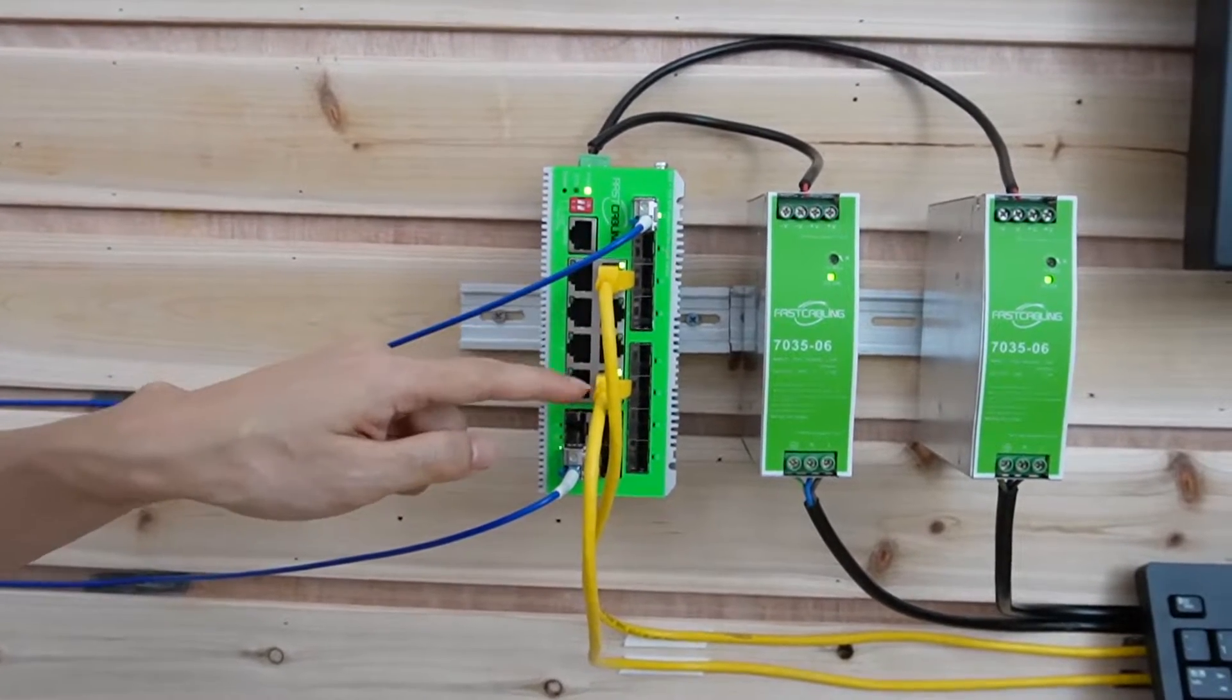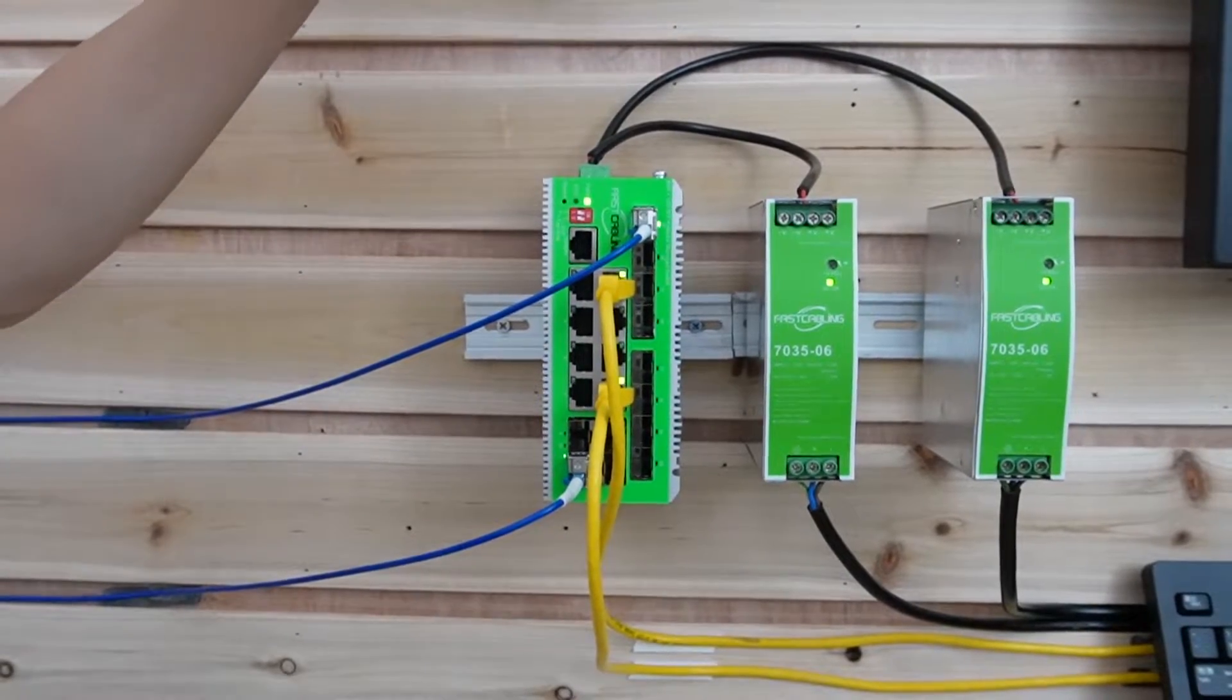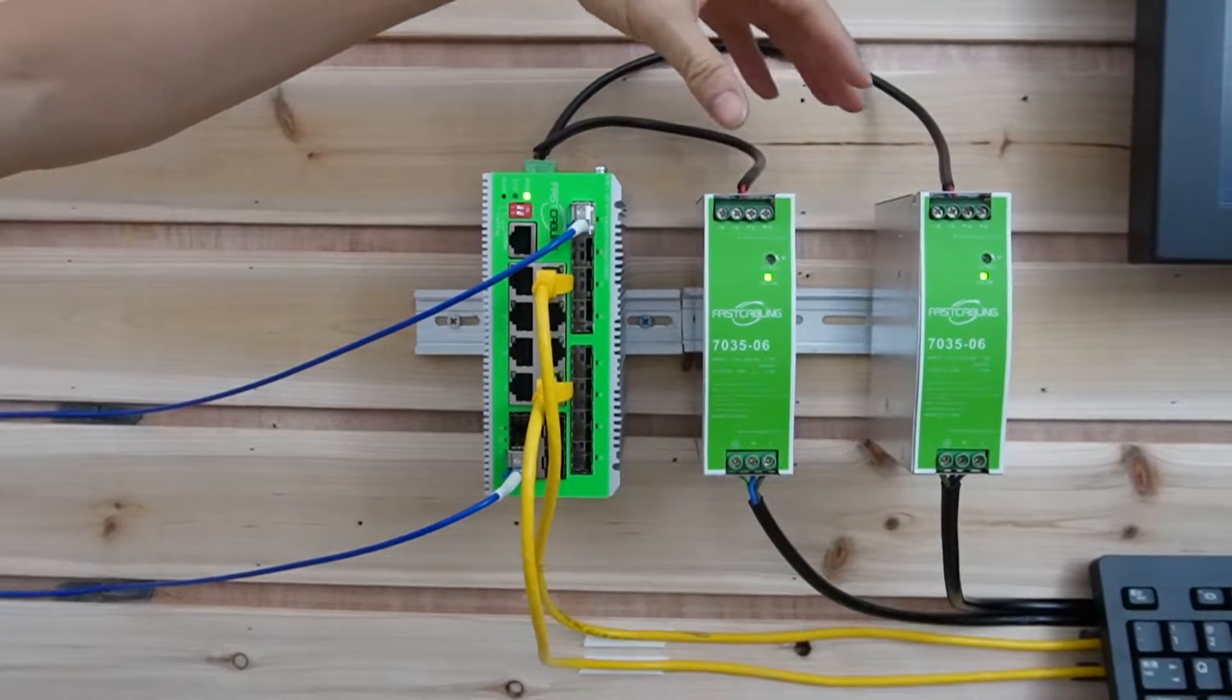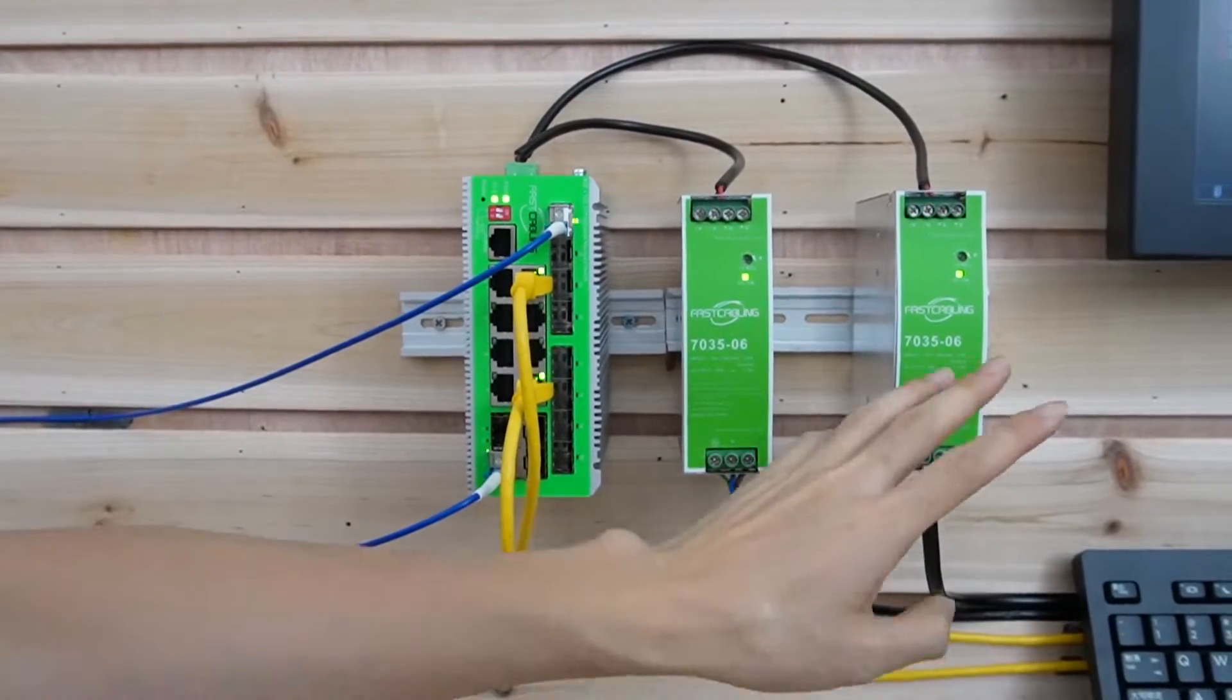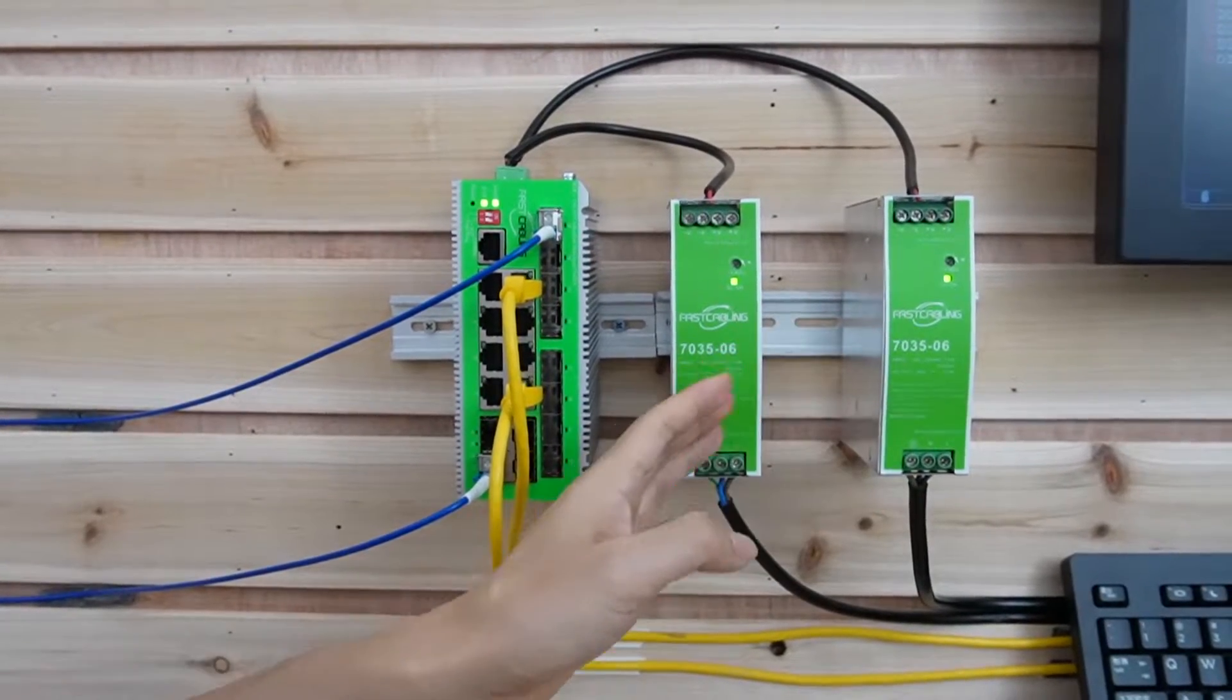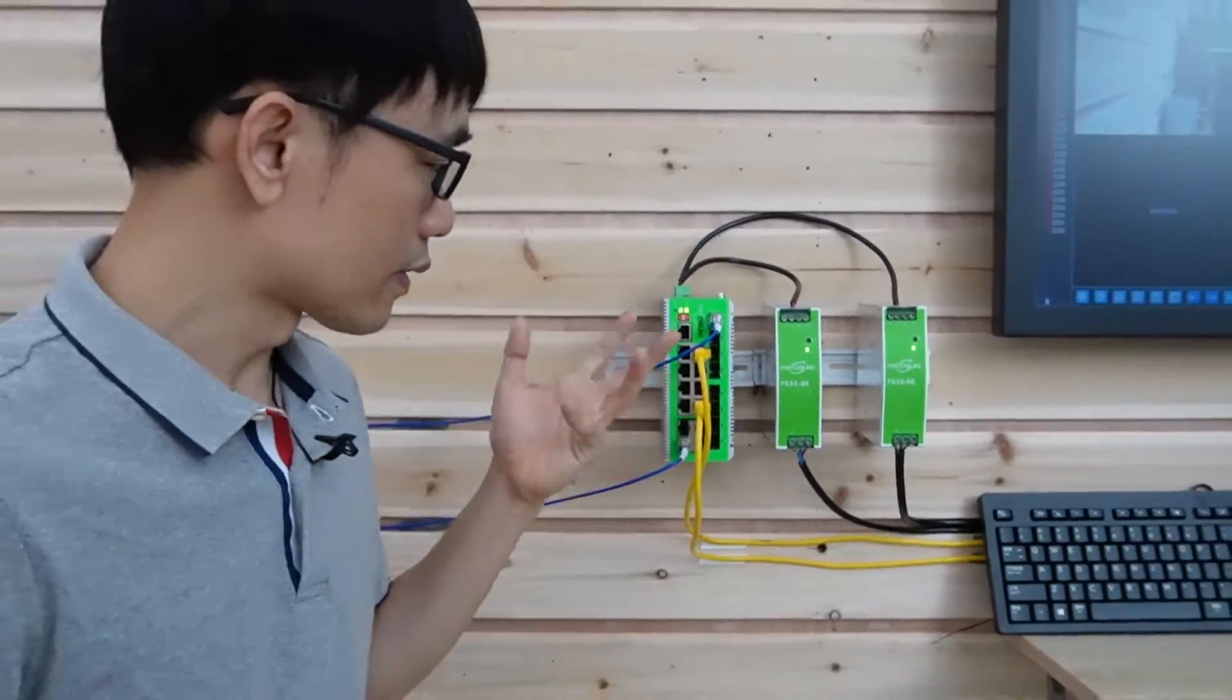These two cables are connecting to the network video recorder. That's the reason why we are seeing the camera live. And I use this industrial grade network switch. It supplies redundant power sources. I use two power sources to power this switch. If one of the power supplies goes down, the network switch is still working. Also, the industrial grade switch is more reliable.